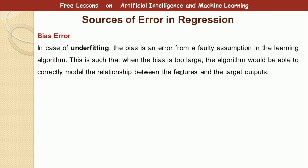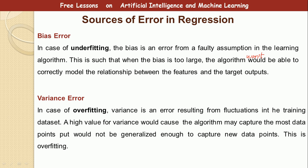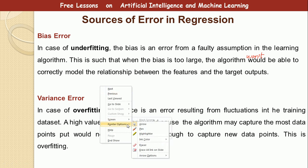Bias is an error from a faulty assumption in the learning algorithm. When the bias is too large, the algorithm won't be able to correctly model the relationship between the features and the target variable. Variance error results from fluctuations in the training datasets. A high variance value will cause the algorithm to capture most data points but not be generalized enough to capture new data.